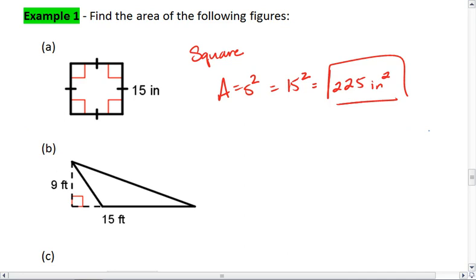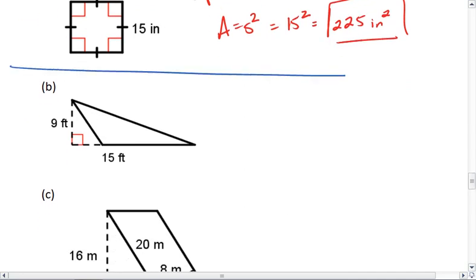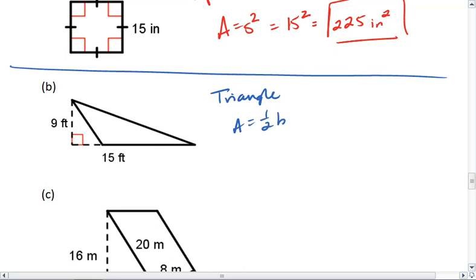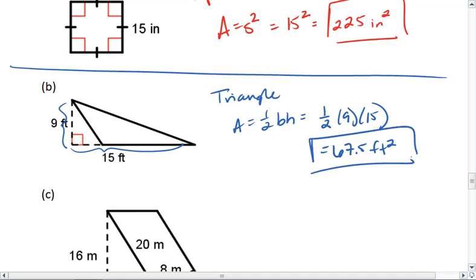For Part B, we have a triangle. The area for a triangle is one half base height. In this case, 15 is our base and 9 is our height. Notice how they are perpendicular to one another. We have that right angle. So, area is one half, 9 times 15. 9 times 15 is going to be 135. Divide that by 2 and we get 67.5 feet squared. Remember to include the units and remember to square them. Area is a two-dimensional measure.